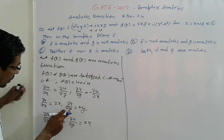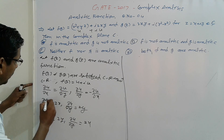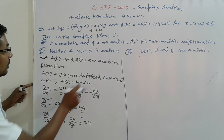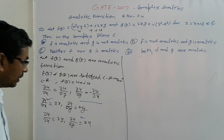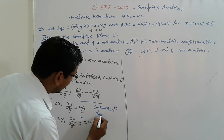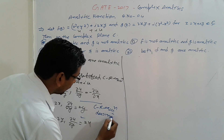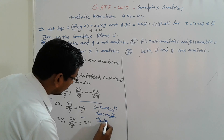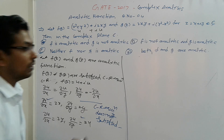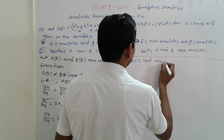So here it is clear: checking the CR equation del u / del x = del v / del y. Check: del u / del x is here, del v / del y is here — that is satisfied. But del u / del y should equal − del v / del x, and here it is not satisfied. It means the CR equation does not satisfy, so f(z) is not analytic.